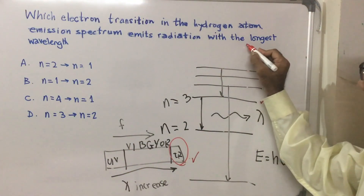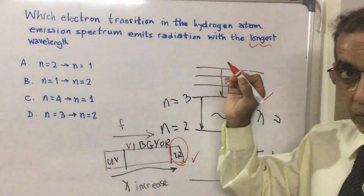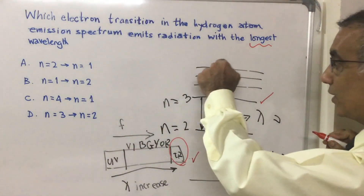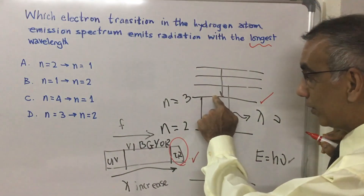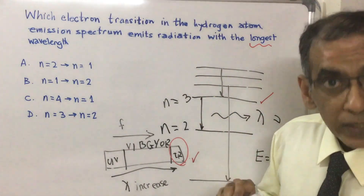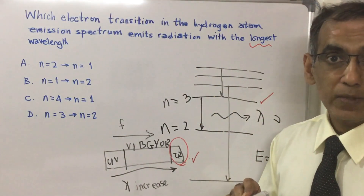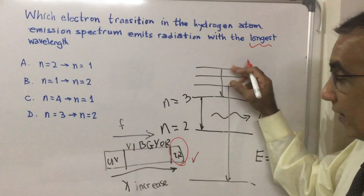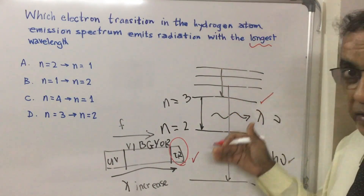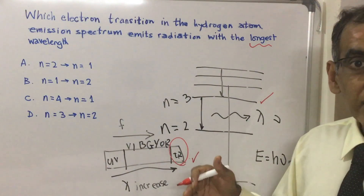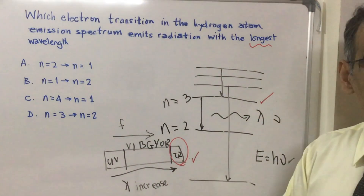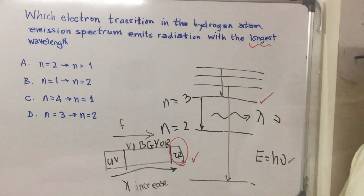Because you get the longest wavelengths for infrared, you are searching for a transition from higher levels to n=3, since from your knowledge of the hydrogen emission spectrum you know that transitions from higher levels to n=3 provide lines in the infrared part of the spectrum. So the answer to this question is D.